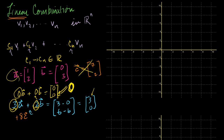Let me draw a and b here so we can think about it visually. So a is [1, 2] — that looks like this. That's vector a. Vector b is [0, 3] — that looks like that. If we take 3 times a, that's the equivalent of scaling up a by 3 — you go 1a, 2a, 3a — so 3 times a will look like that.